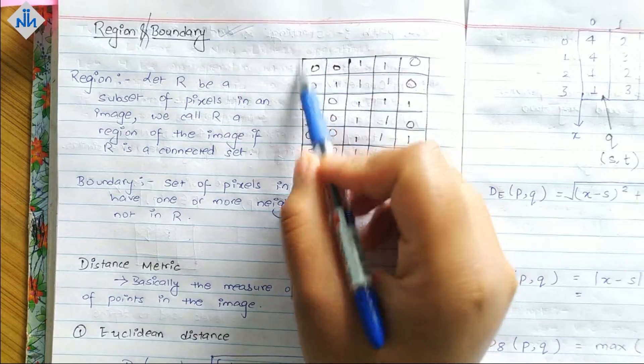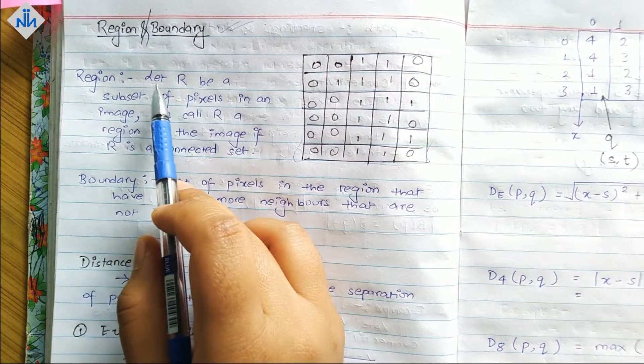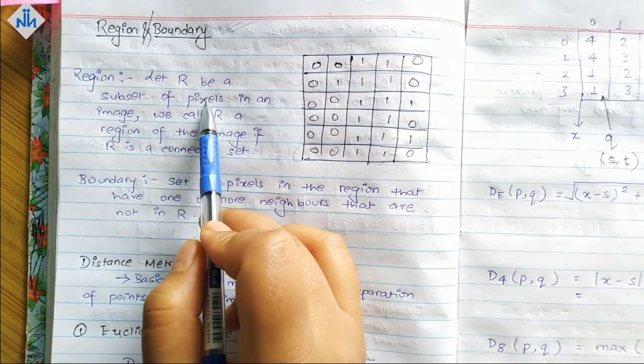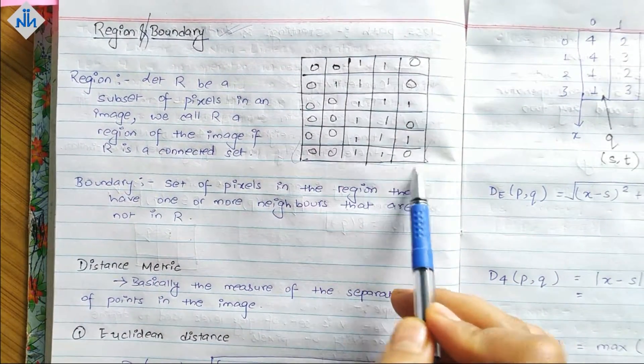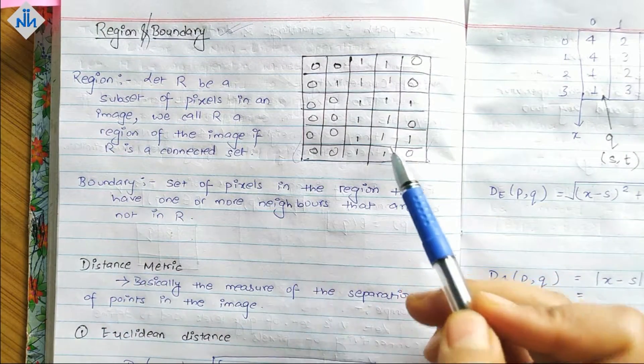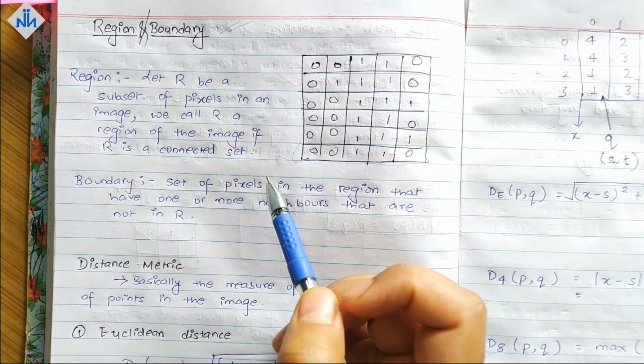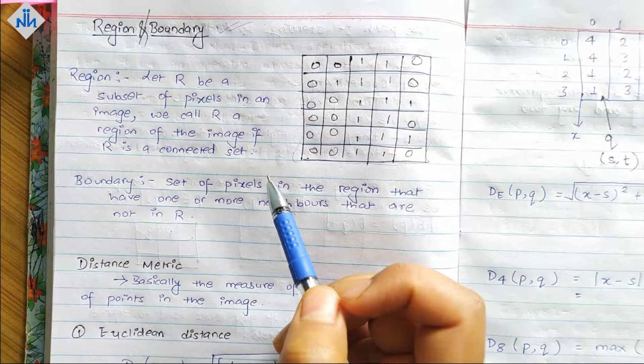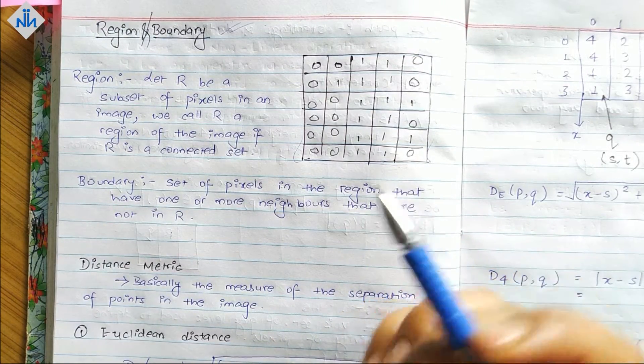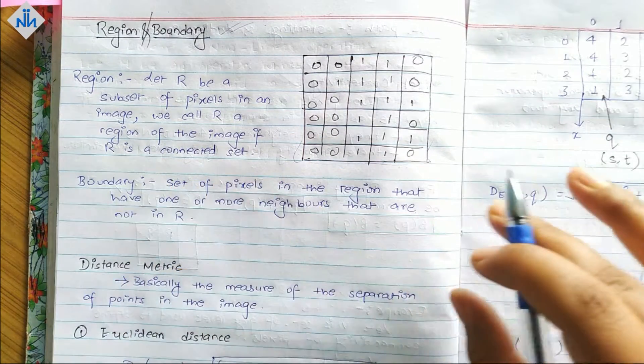This is our image and these are our values. Let R be a subset of pixels in an image. We call R a region if R is a connected set. So basically, if we have a subset of pixels which are connected (connected means it can be 4-connected, m-connected, 8-connected, anything that we need), then we call that a region.